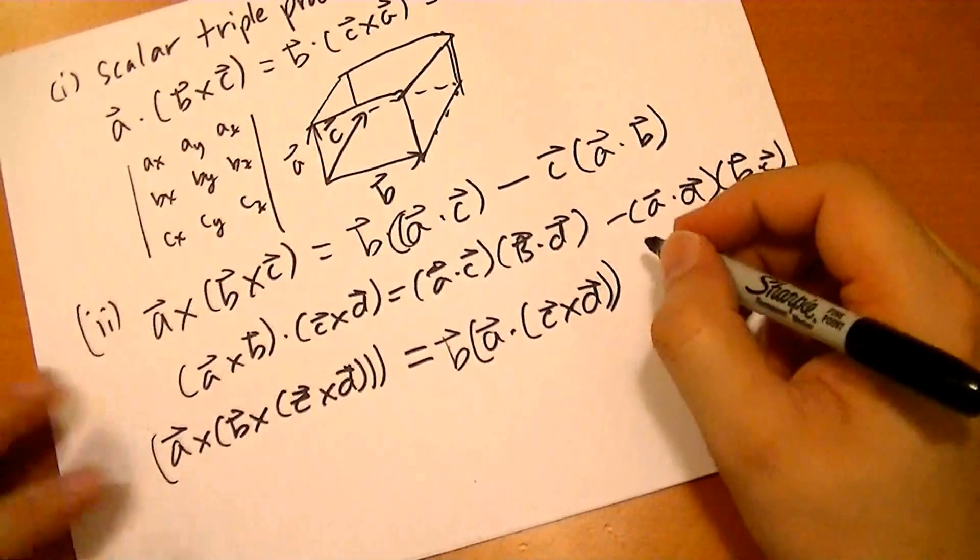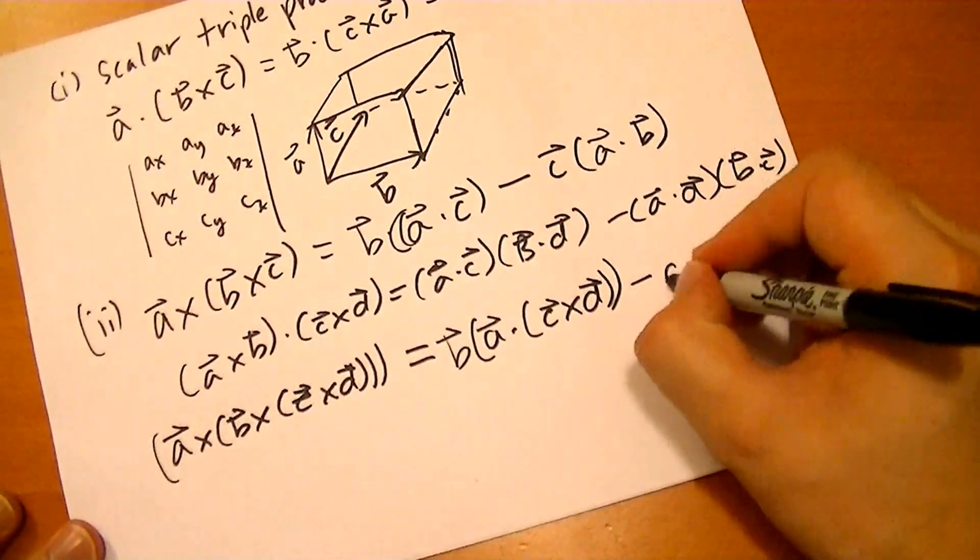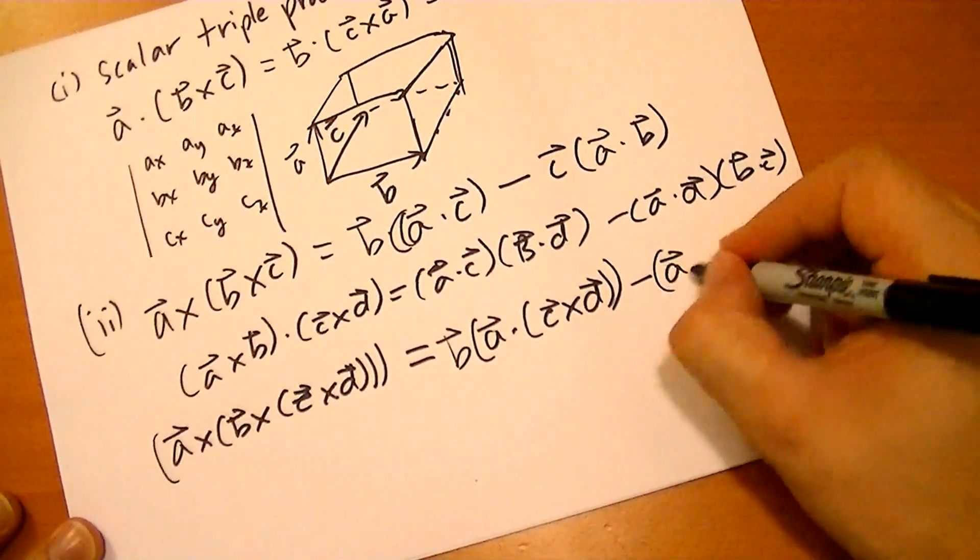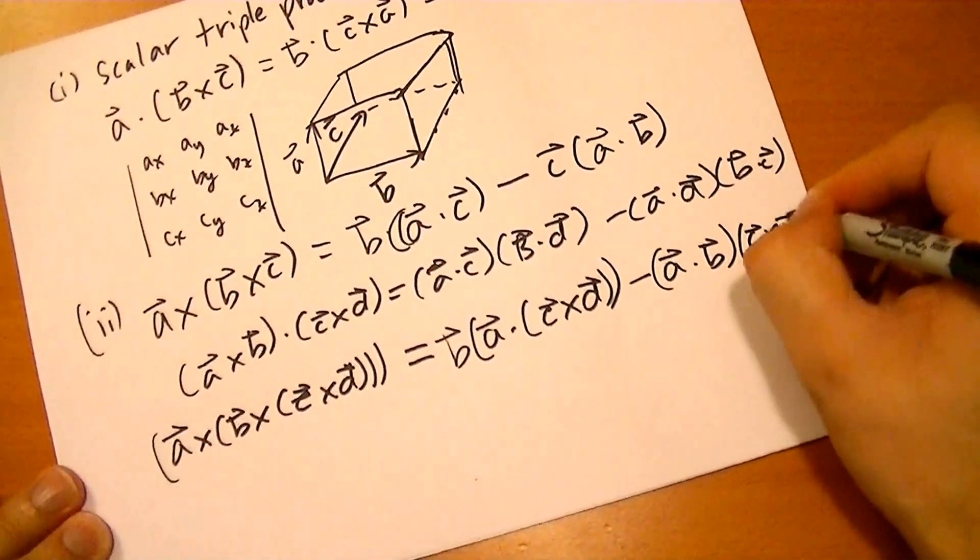That's the volume, that's the scalar triple product right there. And then the other terms can be simplified, so you get (A dot B)(C cross D).